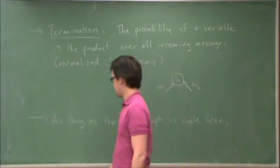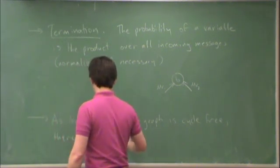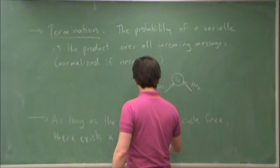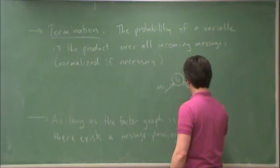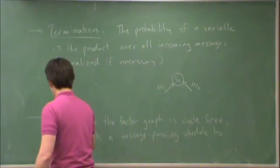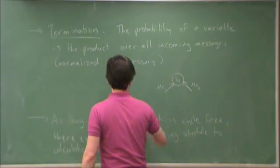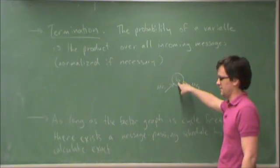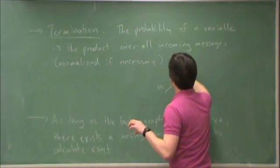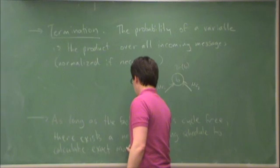There exists a message passing schedule to calculate exact probabilities. Exact probabilities of each individual variable, we actually call these the marginal probabilities. So for each individual variable, the marginal probability is just the probability of that individual variable. Exact marginal probabilities.